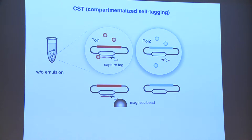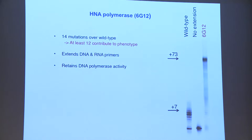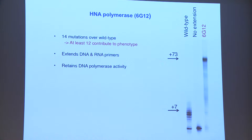Once we were able to get this to work, we very quickly arrived at a polymerase that can do HNA. This is 6G12 — you can see this is our starting point. Now we can synthesize easily 73 nucleotides; we can go a lot further, but this is just a tRNA gene, just to show that we can do an actual biological gene.